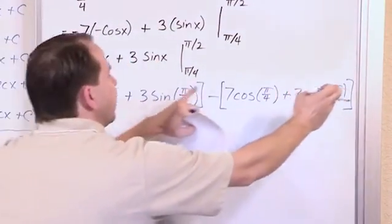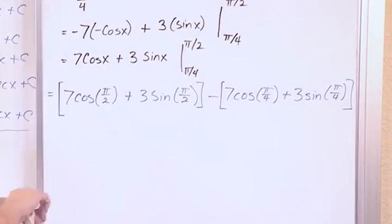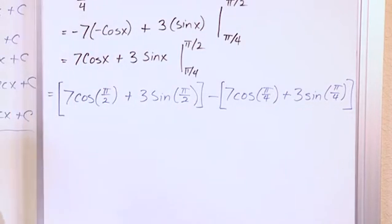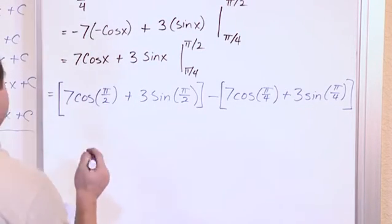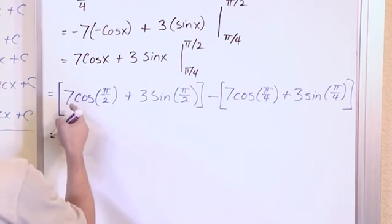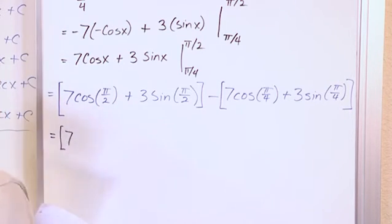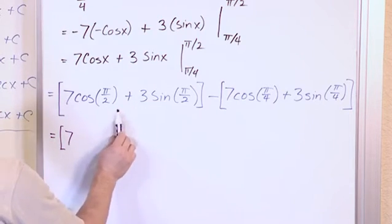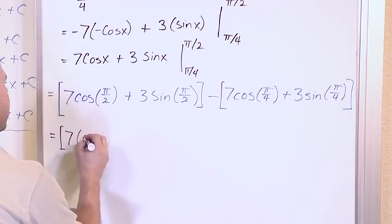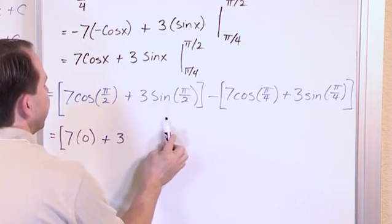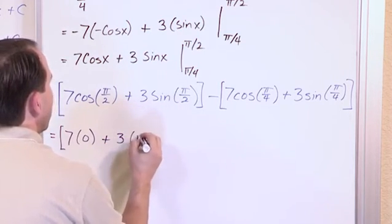We have bracket minus bracket. So it's clear at a glance that this is the top limit of integration, this is the bottom limit of integration. Let's switch colors and see what happens here. Inside the bracket, we have 7. Cosine of π/2, if you think back to your unit circle, π/2 is up here. So the cosine of that is just 0, plus 3 times the sine of π/2, which is 1.